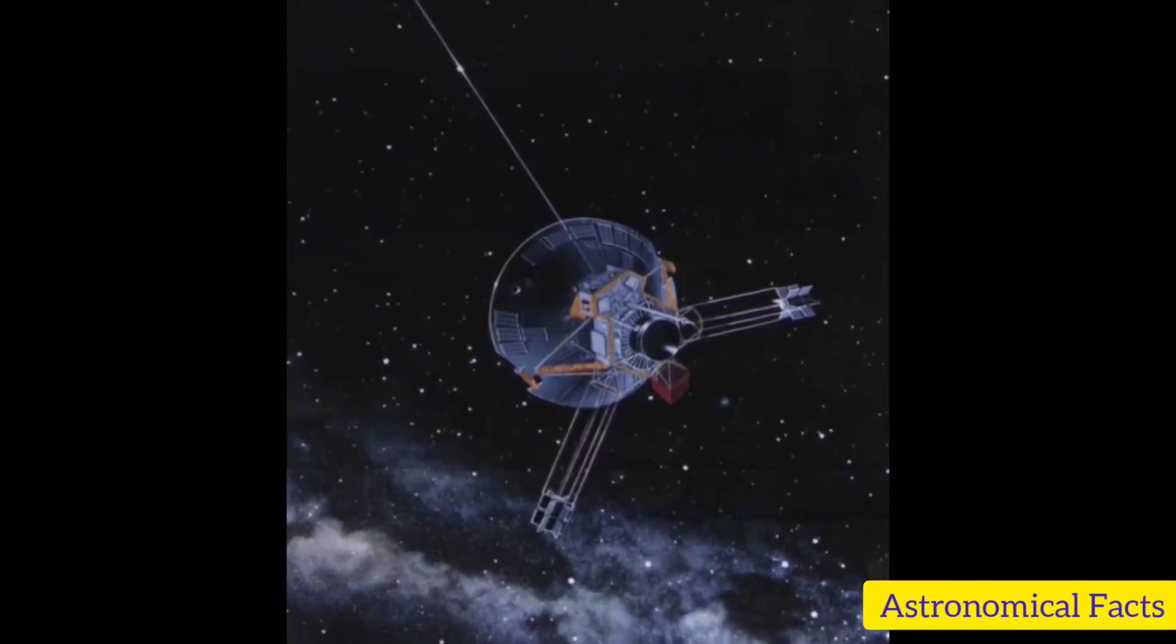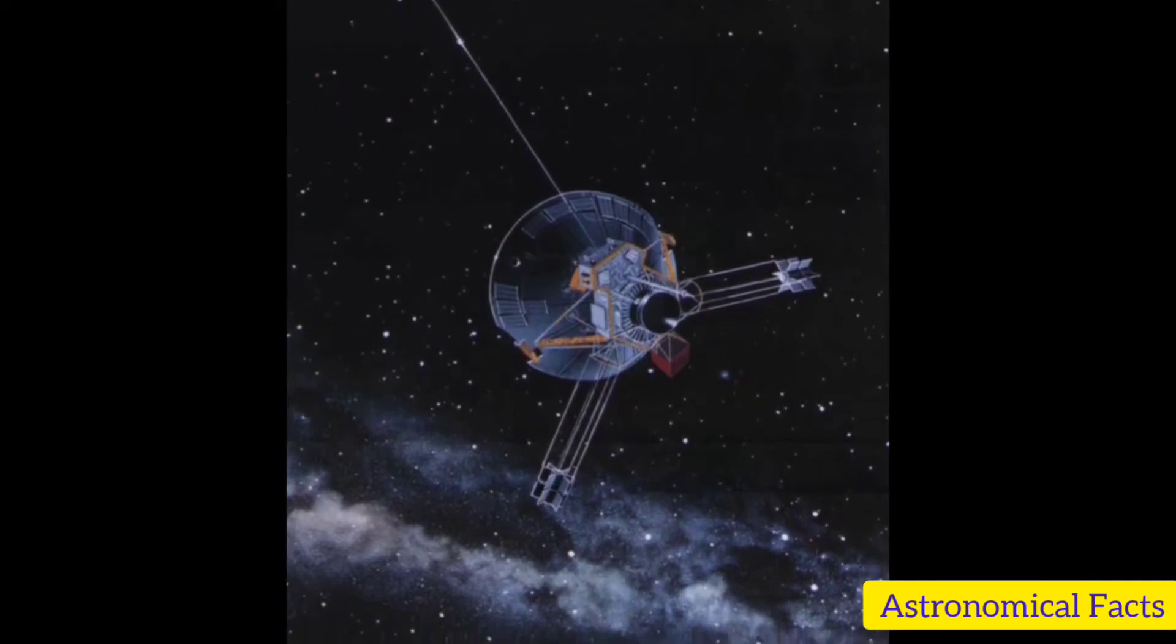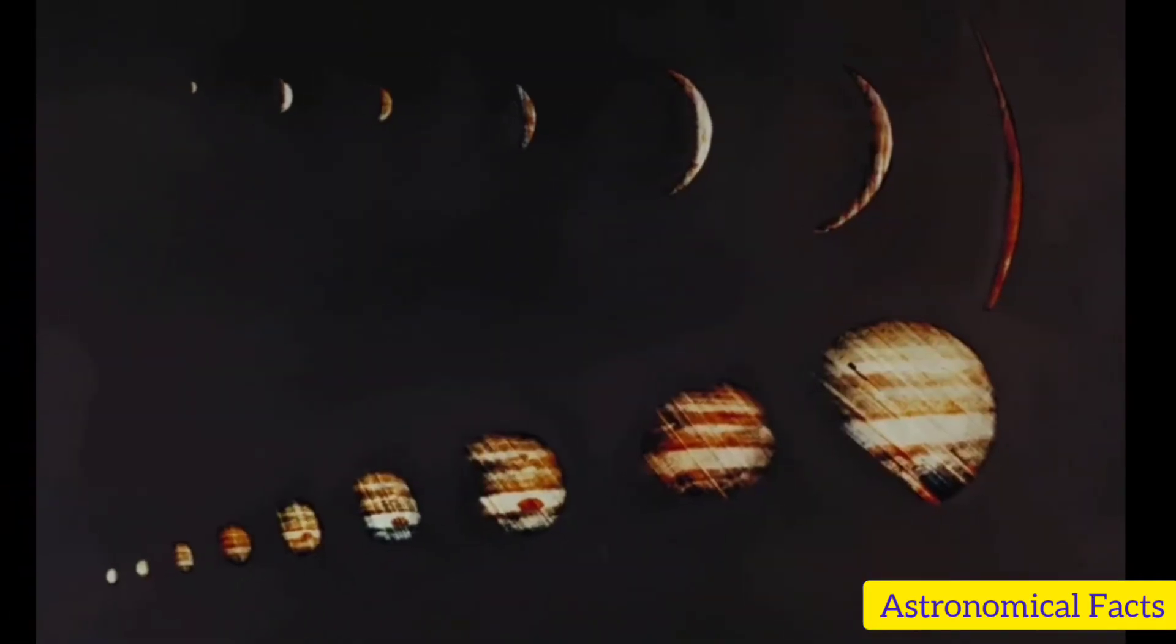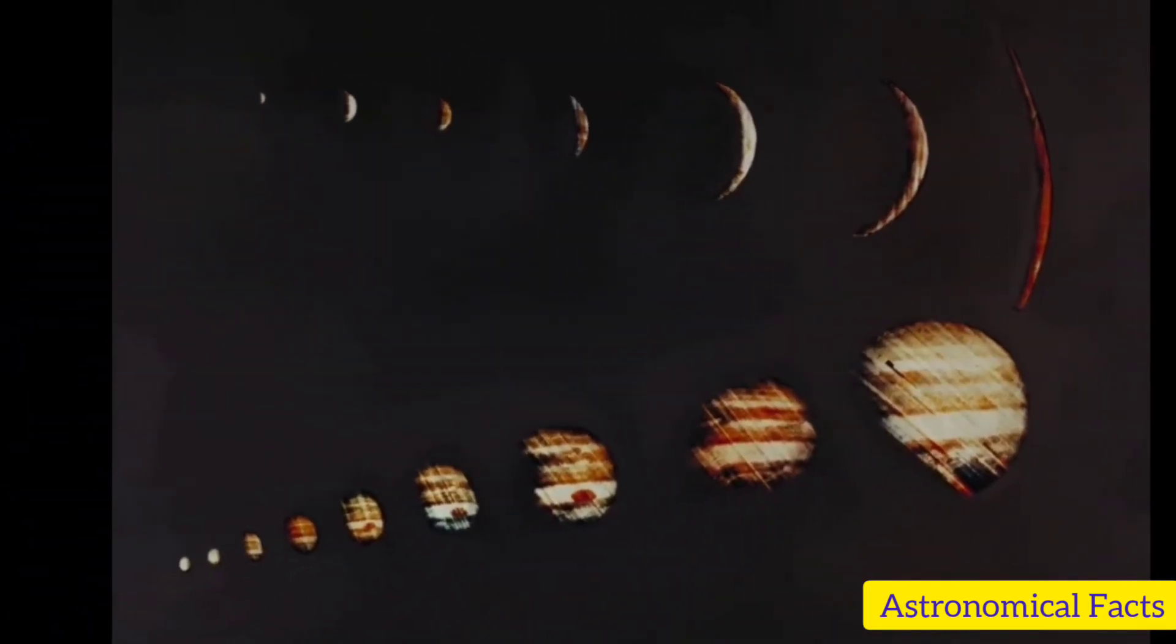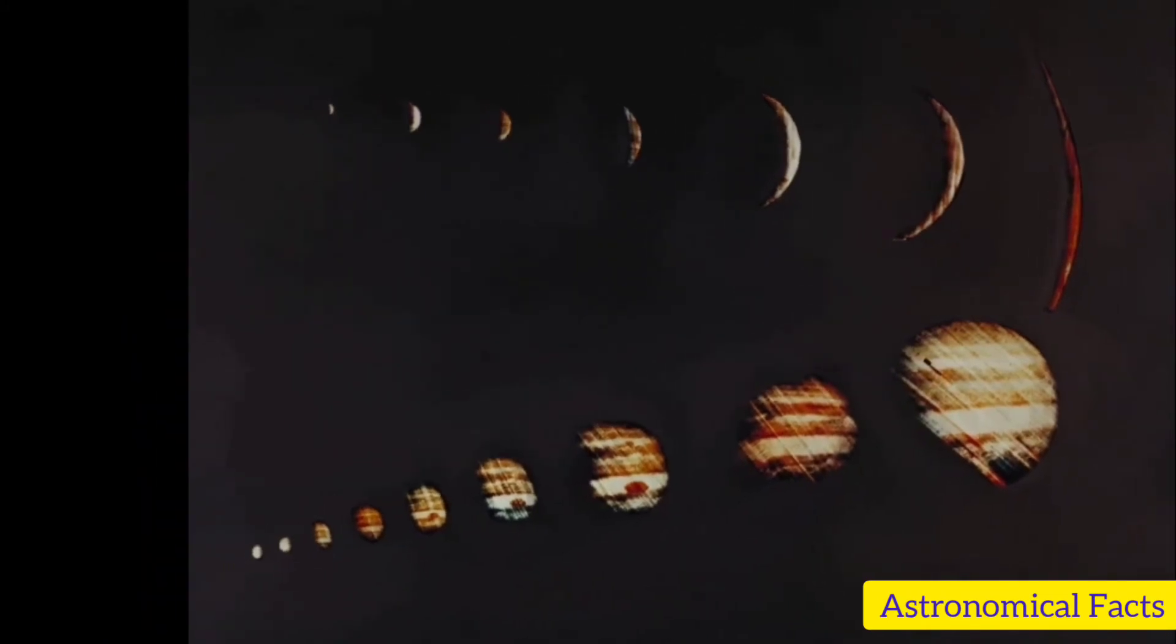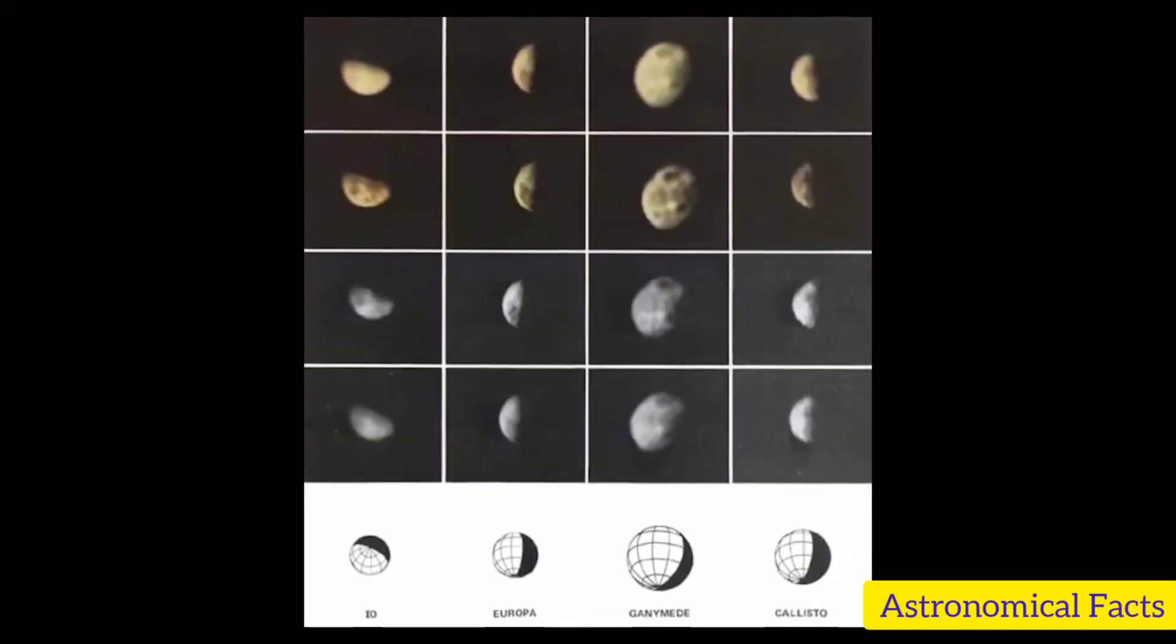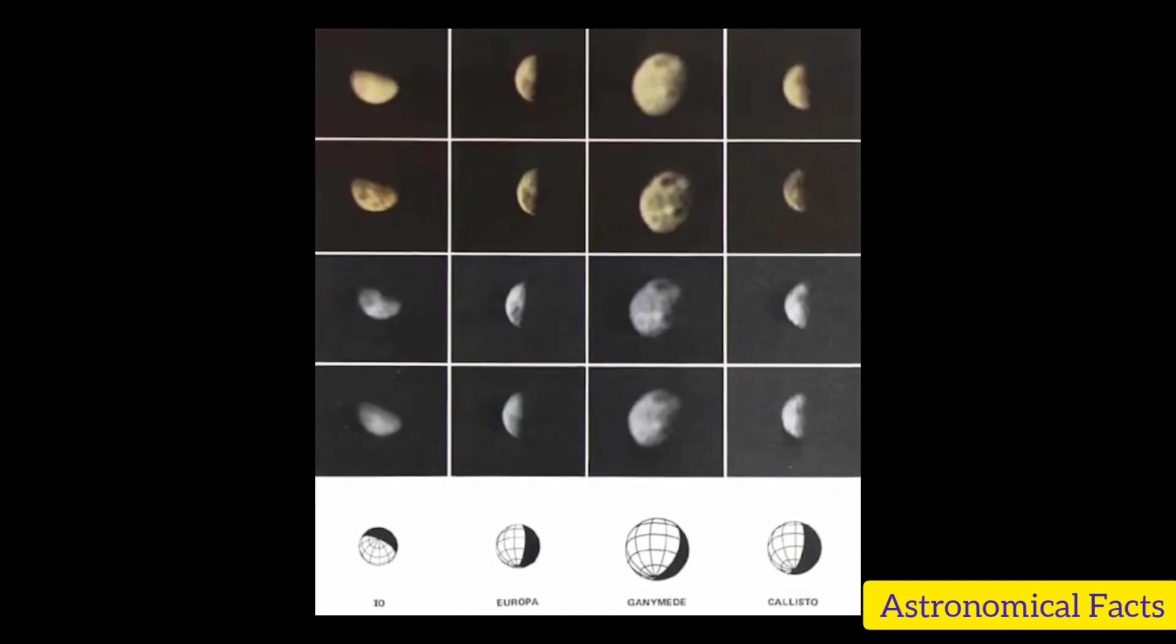In December 1973, after successfully negotiating the asteroid belt and a distance of 620 million miles, Pioneer 10 reached Jupiter and sent back to Earth the first close-up images of the spectacular gas giant.